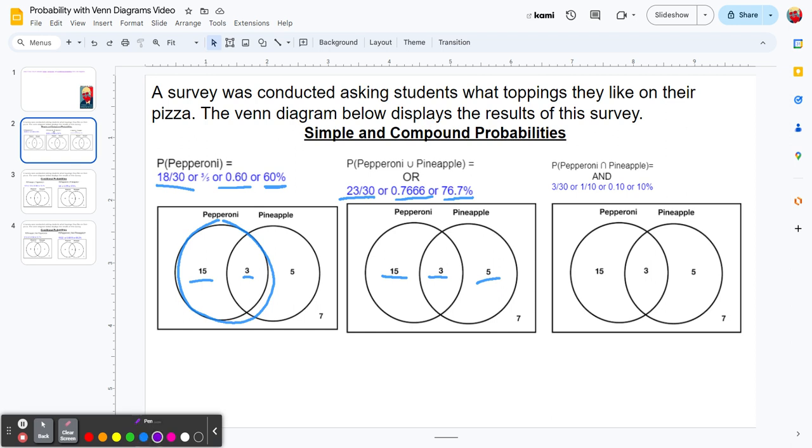Think of the probability of pepperoni by itself - that's 18 out of 30. Then the probability of pineapple by itself is 8 out of 30. When we add those, we have an overlap. We double counted the 3.